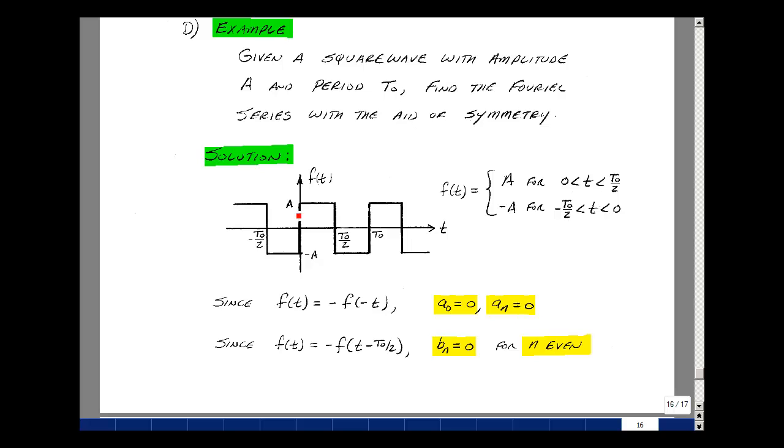Let's sketch out our f(t). We have a value of A, then a value of minus A, A, and minus A, and likewise go in the other direction, minus A and then A. Our period is T0, and our half period is where we make the transition from A to minus A.